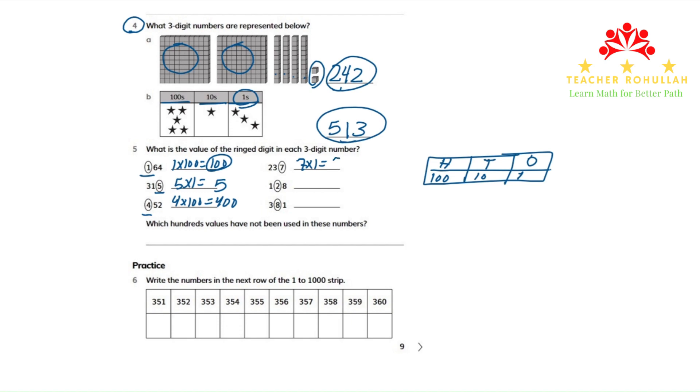The fifth number is 128. And the ringed digit is 2. 2 is in the 10s place. So what do we have to do? We will multiply it by 10. And the value of 2 in the 10s place is 20.